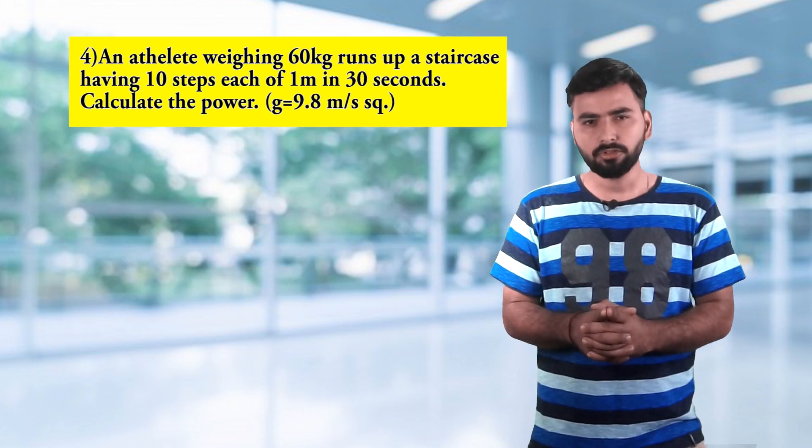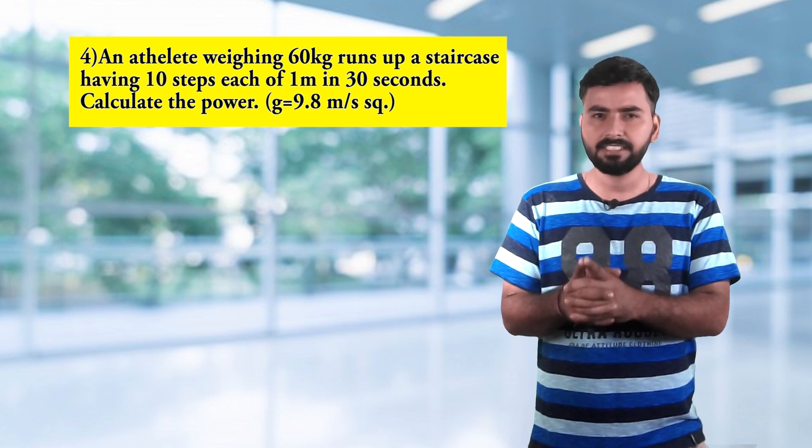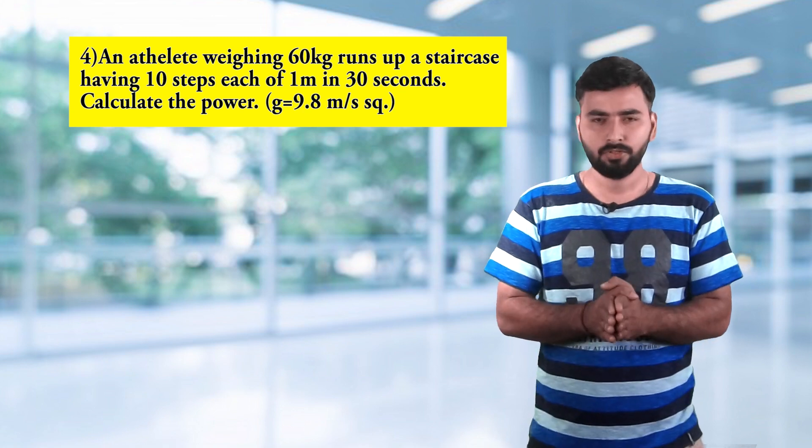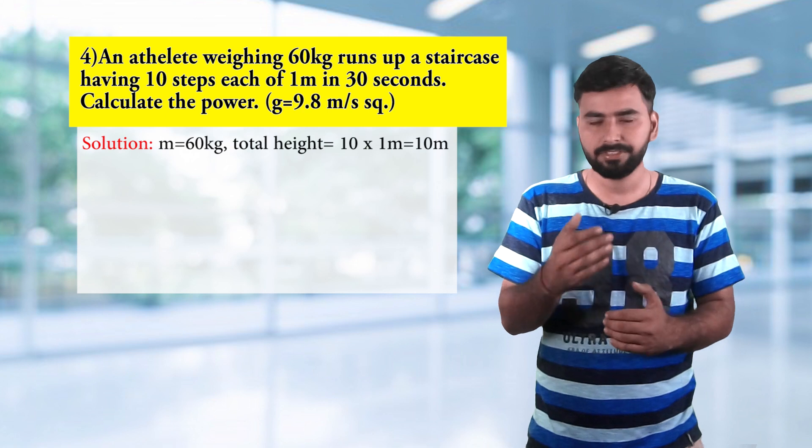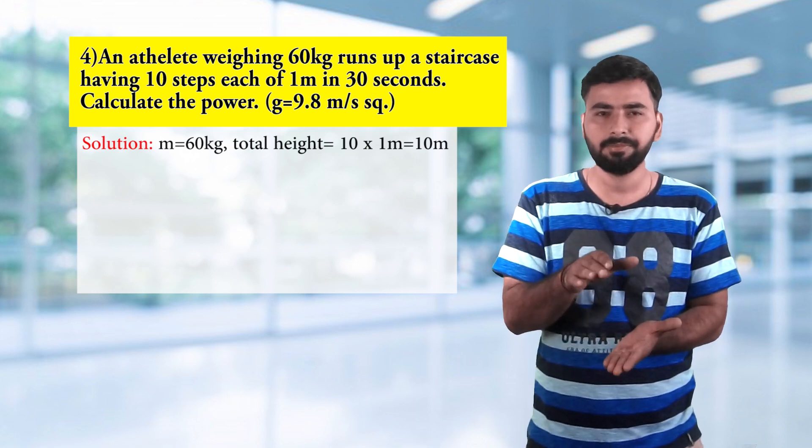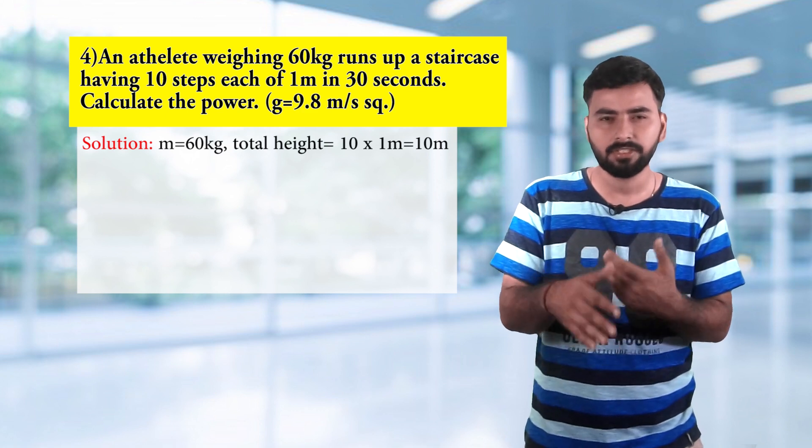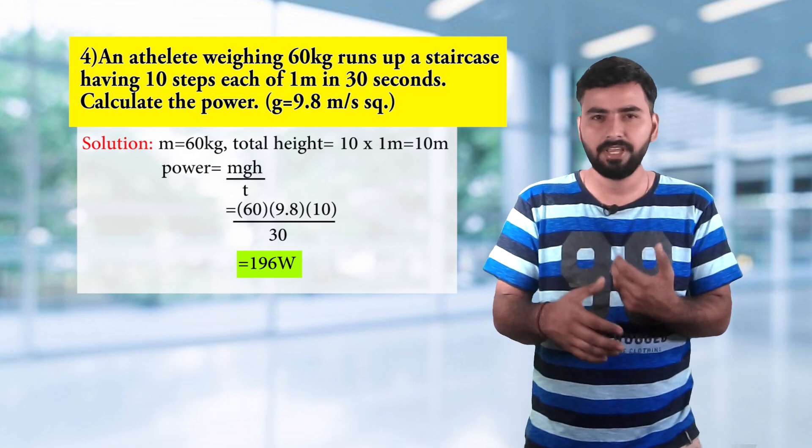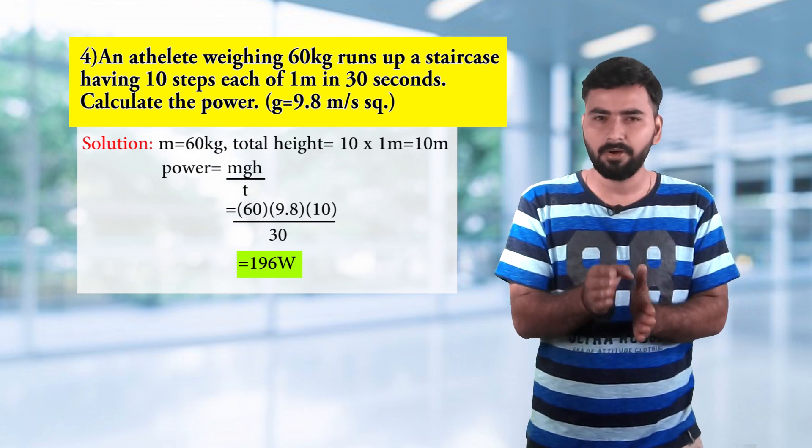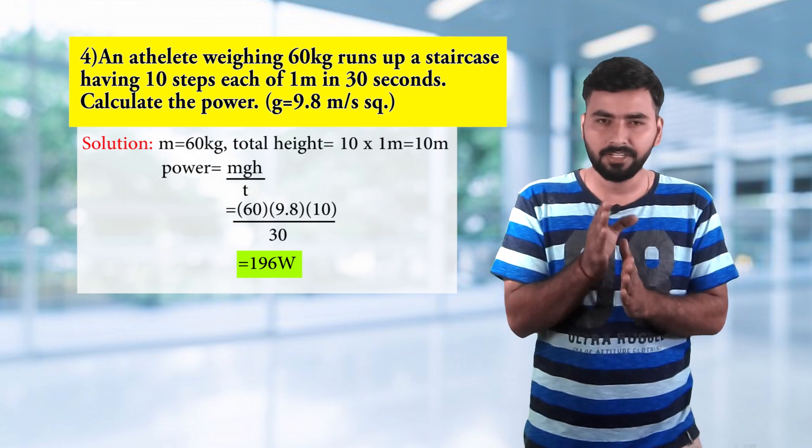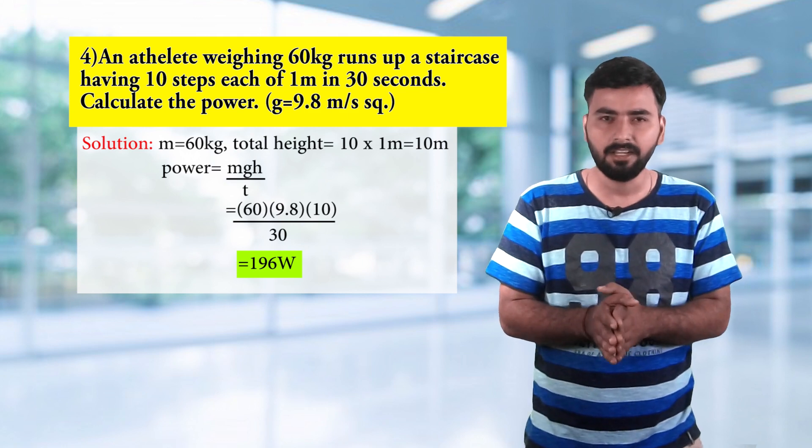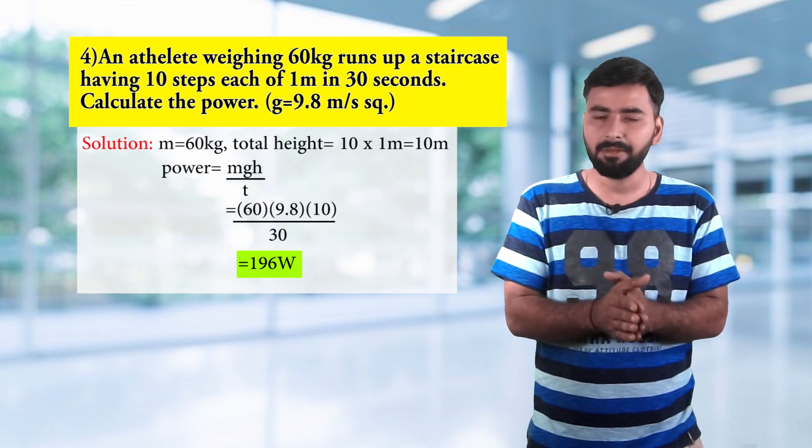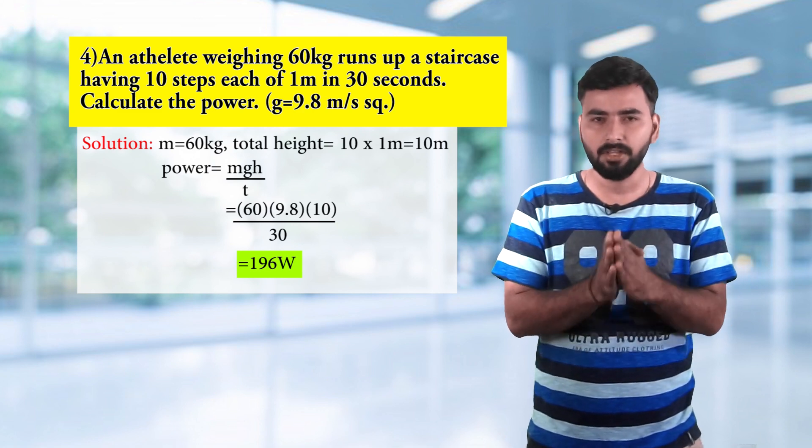The fourth question is: an athlete weighing 60 kg runs up a staircase of 10 steps, each of 1 meter, in 30 seconds. We need to calculate his power, given g equals 9.8. The athlete climbed 10 steps of 1 meter height, so total height covered is 10 meters. Power is work upon time, which is potential energy upon time. Potential energy formula is mgh, so that is mass 60 kg, g is 9.8, height is 10 meters, divided by time 30 seconds. Calculating this we get 196 watts.